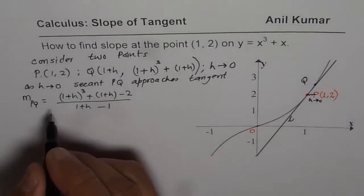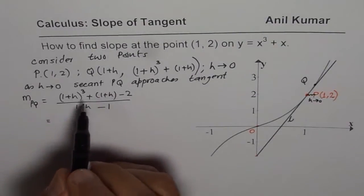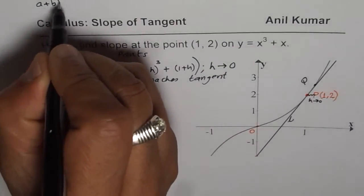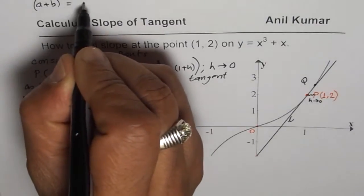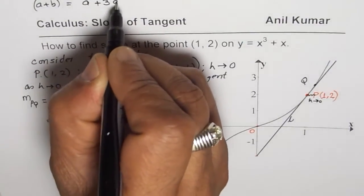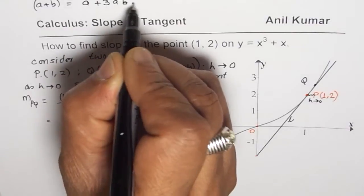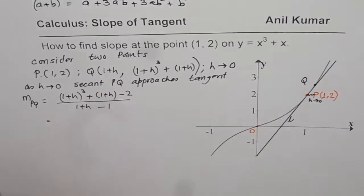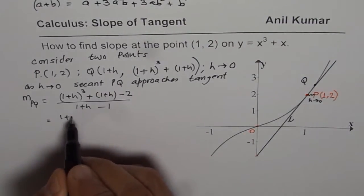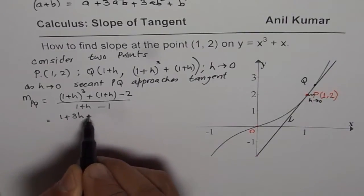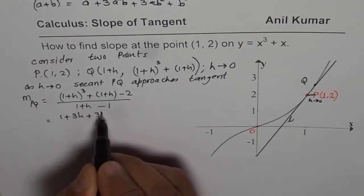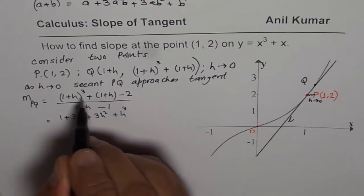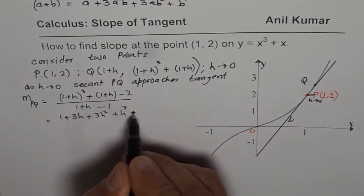Now let me expand and simplify. Using the formula (a plus b) cubed equals a cubed plus 3a squared b plus 3ab squared plus b cubed, we expand (1 plus h) cubed to get 1 plus 3h plus 3h squared plus h cubed. The second term is 1 plus h.